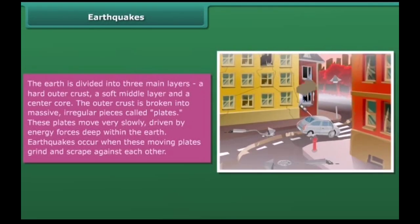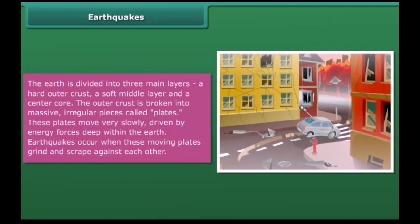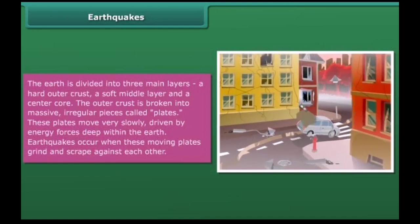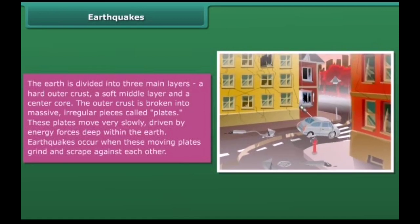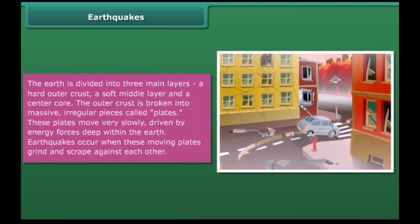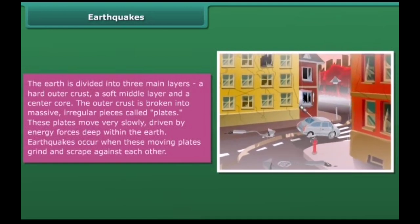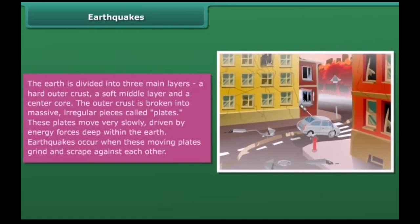Earthquakes. The earth is divided into three main layers: a hard outer crust, a soft middle layer, and a center core. The outer crust is broken into massive irregular pieces called plates. These plates move over slowly, driven by energy forces deep within the earth. Earthquakes occur when these moving plates grind and scrape against each other.